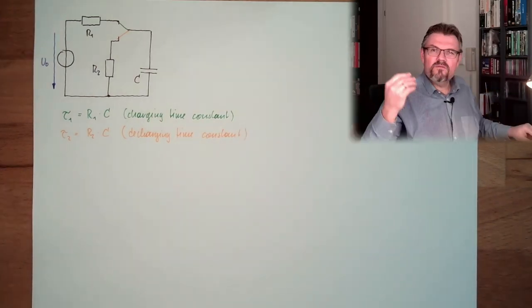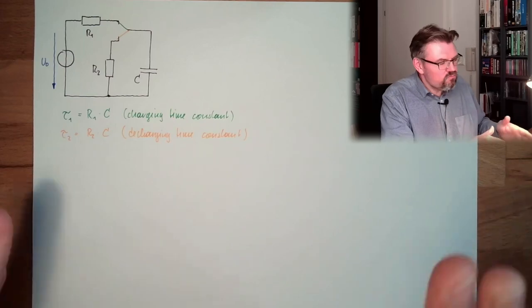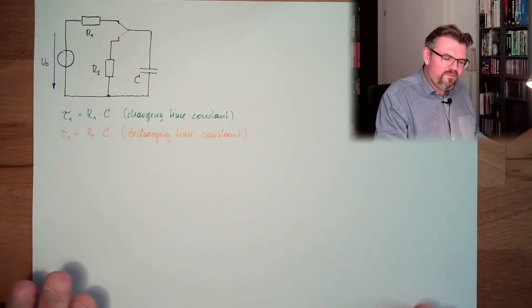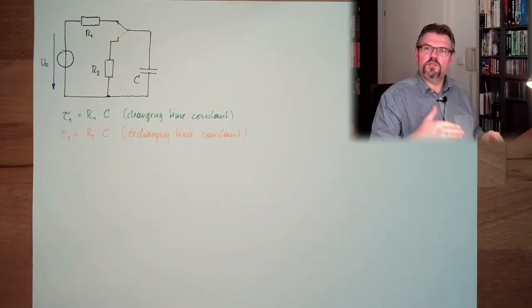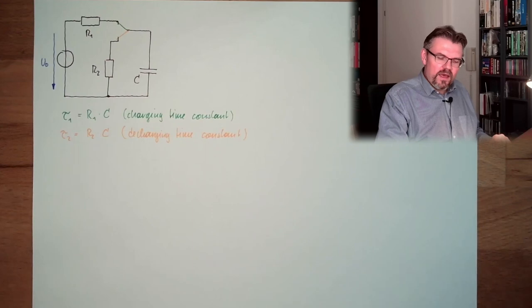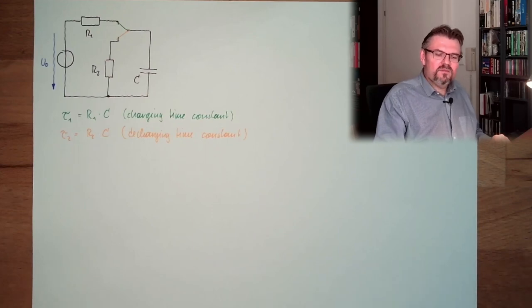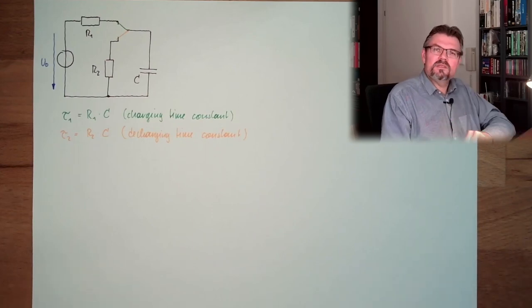So the time constants may differ depending on the circuit. We have a switching element that changes the circuit, and this can lead to different charging and discharging time constants.